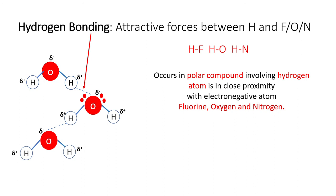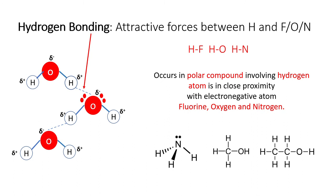Other examples of molecules with hydrogen bonding are ammonia and alcohols such as methanol and ethanol. These hydrogen bonds are also the reason for these molecules to be highly soluble in water.